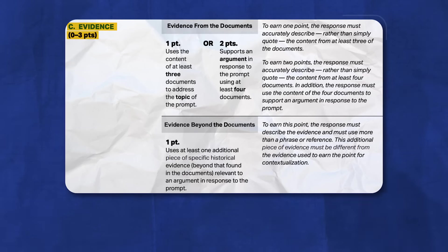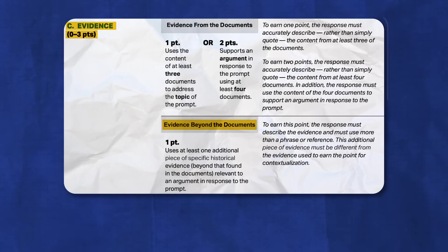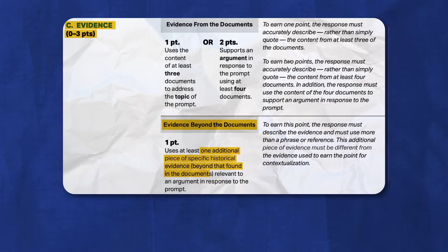The next part of the evidence section is the one point for evidence beyond the documents. To earn this point, you need to connect a specific piece of evidence not mentioned in the documents to the argument of your essay. This requires three things: name it, explain what it is, and connect it to your argument. People tend to lose this point because they name a piece of evidence but forget to explain it or connect it. There's no specific place you need to do this — stick it wherever it's relevant. Your evidence beyond the documents must come from the same time period given in the prompt.